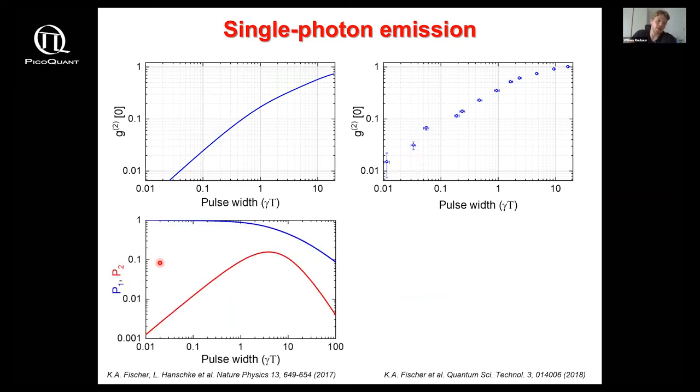From our simulations we can also extract the single and two photon probabilities now as a function of the pulse width, and as you can see there's actually a regime where the two photon emission probability peaks.